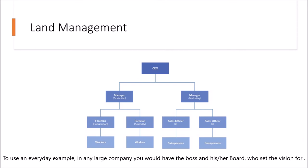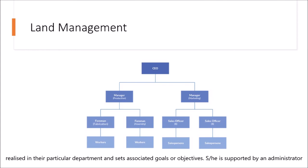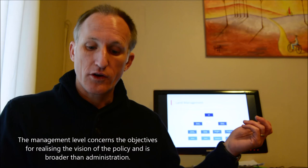To use an everyday example, in any large company you would have the boss or CEO and his or her board who set the vision for what the company does. Each department in the company may have a manager who decides how that vision will be realized in their particular department and sets associated goals or objectives. She or he is supported by an administrator who puts the manager's goals into financed activities to be performed by the workers or professionals under the manager.